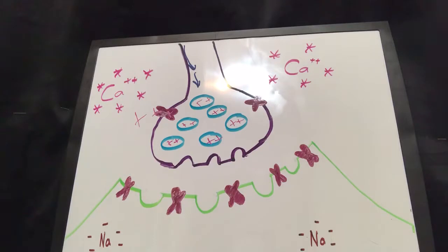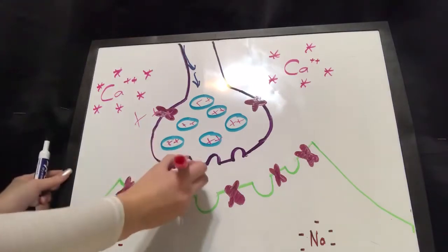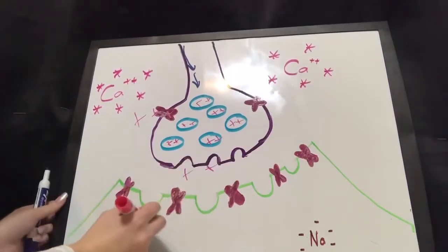The calcium ions then will cause fusions of the vesicles and cause exocytosis, releasing acetylcholine into the synapse. The acetylcholine will then bind to the receptors in the motor end plate, which this will cause the ligand-gated channels to open up, allowing the sodium ions, which are right here, to come out. And they will come down in here.